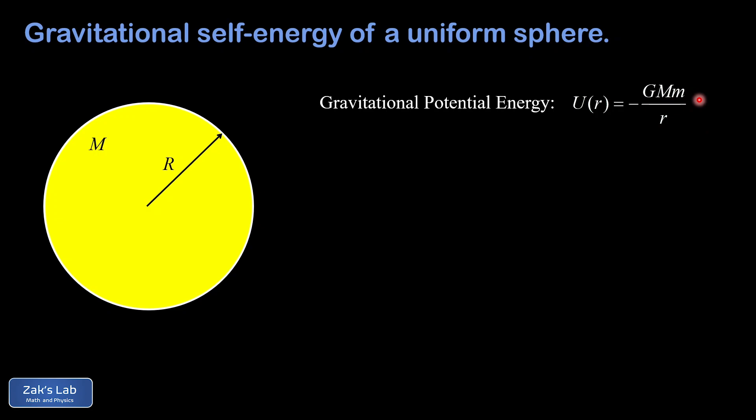Over here on the right we have a reminder of how to calculate the gravitational potential energy between two masses, and that's negative G times the product of the two masses, divided by the separation distance between them. I'll post a link to the derivation of that fact up at the top.